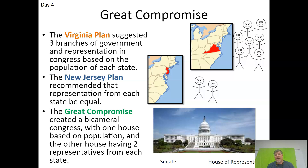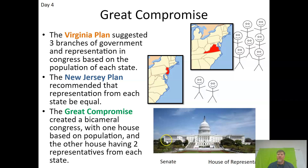The small states didn't like the Virginia Plan because they knew they wouldn't have as much representation. So the New Jersey Plan came back and said representation would be equal for every state with only one house — no House and Senate. The New Jersey Plan was actually closer to the Articles of Confederation. Ultimately, what we came up with is the Great Compromise: you have both the House and the Senate.